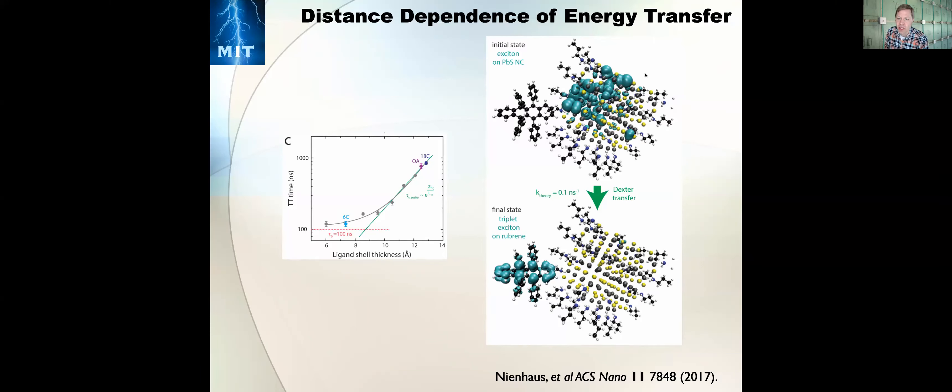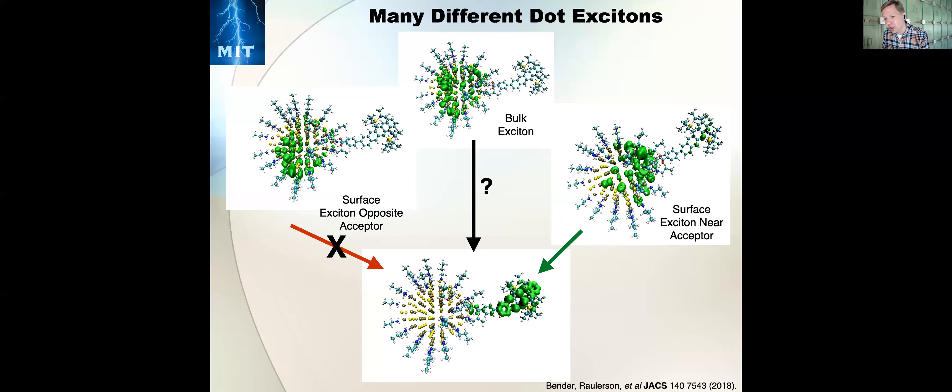Our conclusion is that this is not an intrinsic speed limit — this system is not hitting the fastest possible rate for triplet energy transfer between the quantum dot and the molecule. Something else is limiting the timescale of energy transfer. We uncovered what we think is the right explanation in conjunction with a study done with Sean Roberts' group and Ni Tang, where they were able to tether the molecule to the surface of the quantum dot to get a more controlled geometry for triplet energy transfer.